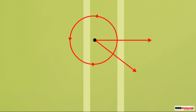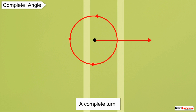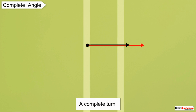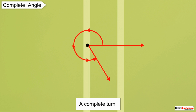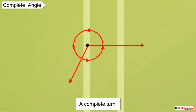A complete turn is called one revolution. In such a revolution, the rays reach their initial position. The complete turn of a revolving ray makes a complete angle. It is equal to four right angles.